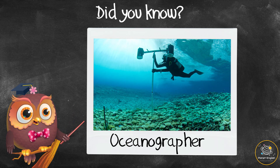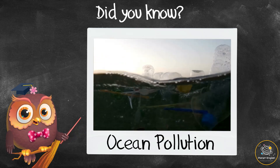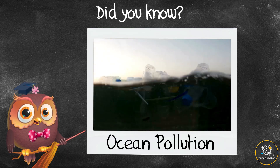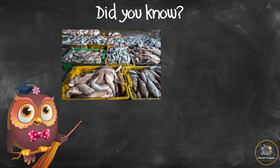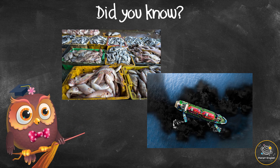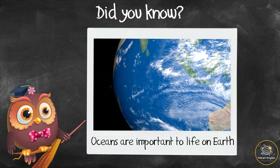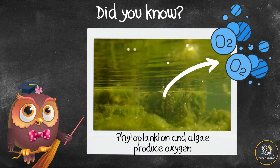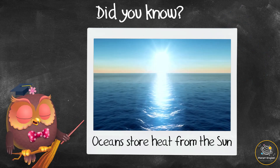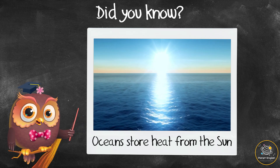Did you know? People who study the oceans are called oceanographers — they study the water, the sea floors and basins, and the plants and animals that live there. Our oceans are full of pollution, which reduces oxygen in the water and harms ocean life. Overfishing and oil spills also damage the oceans. The world's oceans are very important to life on Earth, as phytoplankton and algae produce much of the world's oxygen. Oceans also help to keep the climate stable by storing heat from the sun.